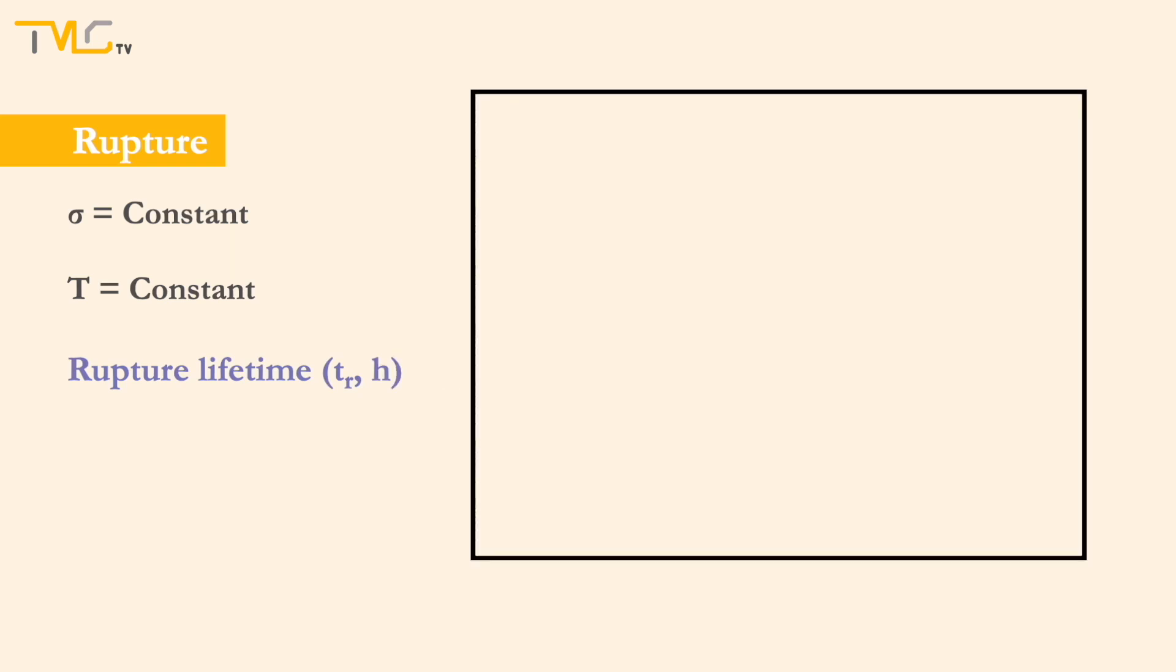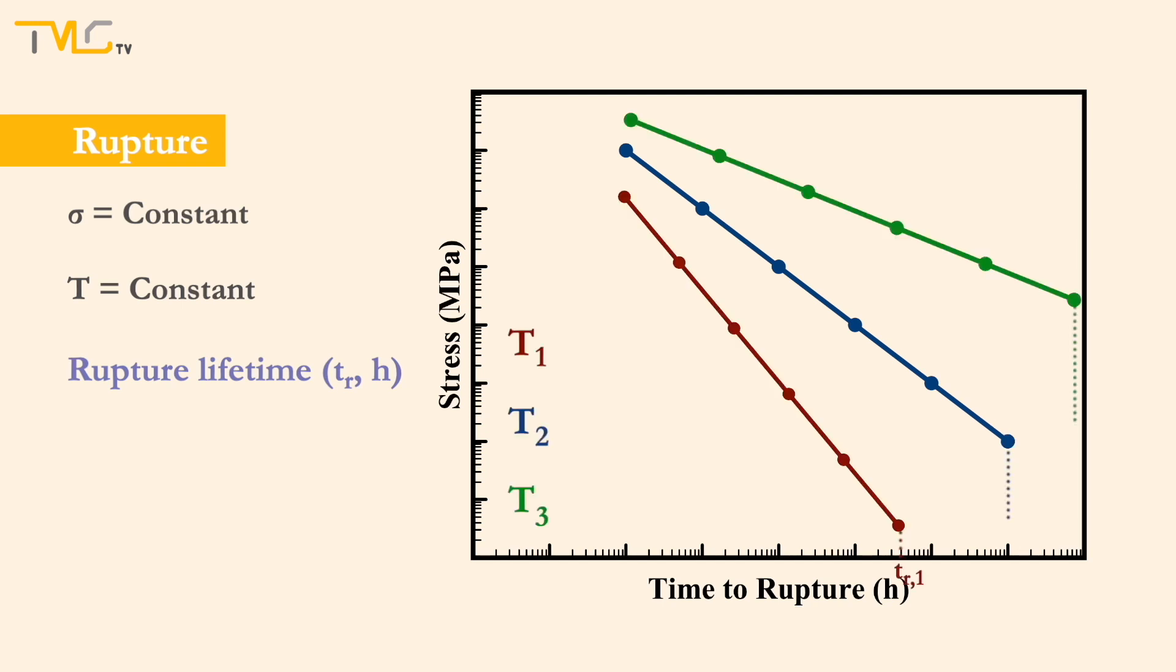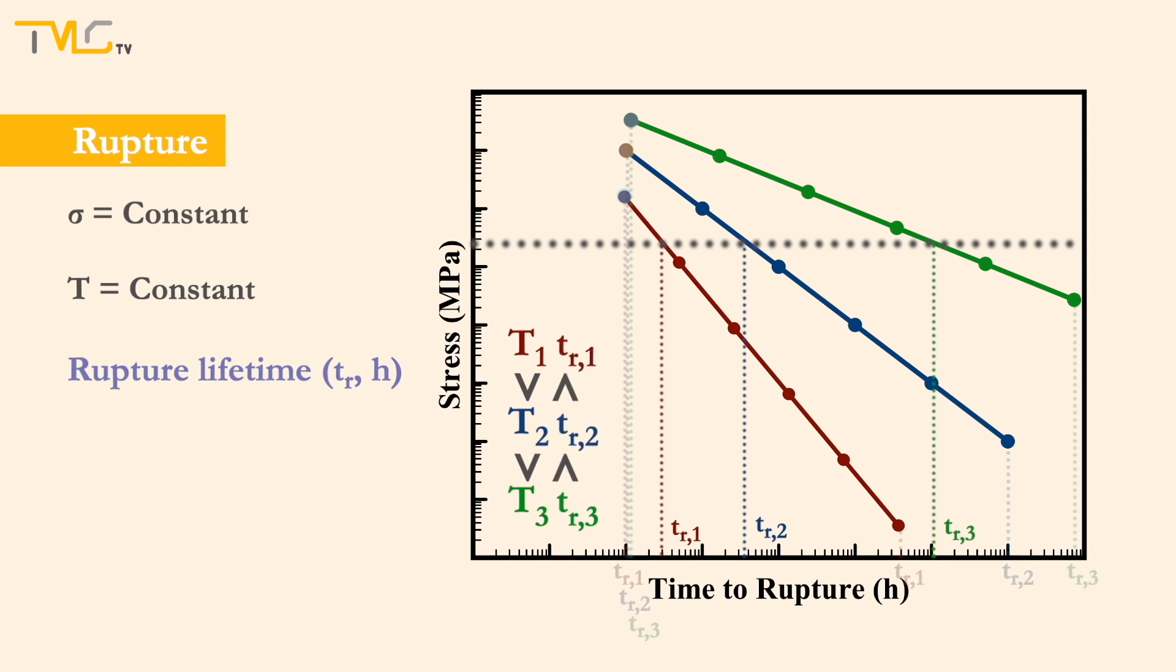Unlike in creep curves, the rupture data plots have stress at y-axis and rupture lifetime at x-axis, and both are plotted in logarithmic scale. For the rupture tests, often an inversely proportional linear correlation between the applied stress and rupture lifetime are observed for each temperature. As a rule of thumb, higher stress values lead to shorter rupture lifetimes for a given temperature. Furthermore, for a given stress value, increasing temperature dramatically decreases the rupture lifetime of the component. In short, increasing stress and temperature increases the amount of plastic deformation and atomic mobility, leading to the rupture.